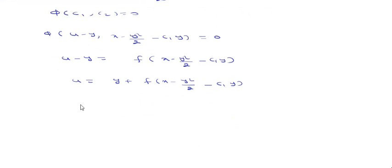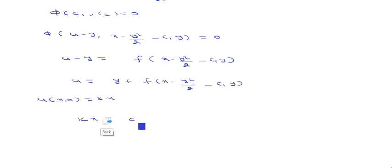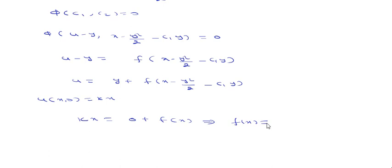Now applying the boundary condition u(x, 0) = kx. Substituting y = 0 on the left-hand side gives kx = 0 + f(x), since y = 0 leaves only x inside f. Therefore f(x) = kx.